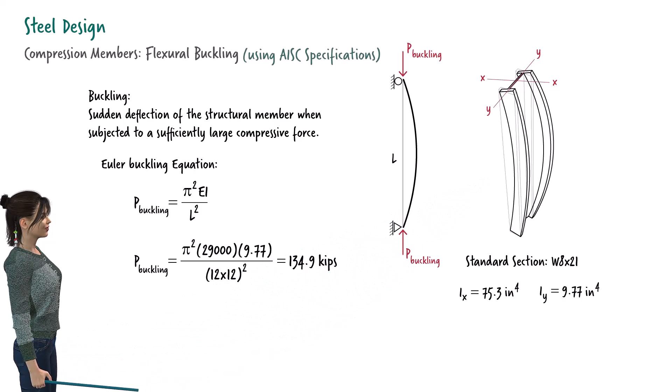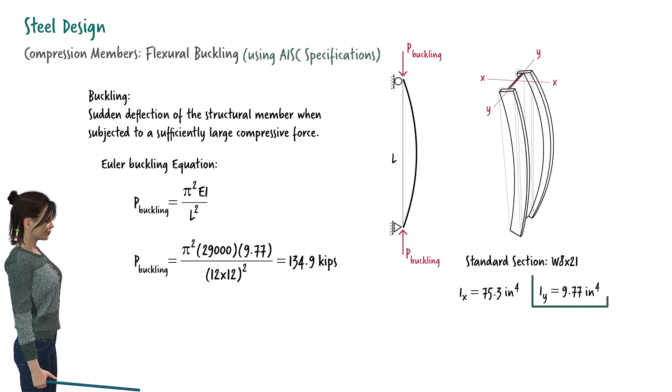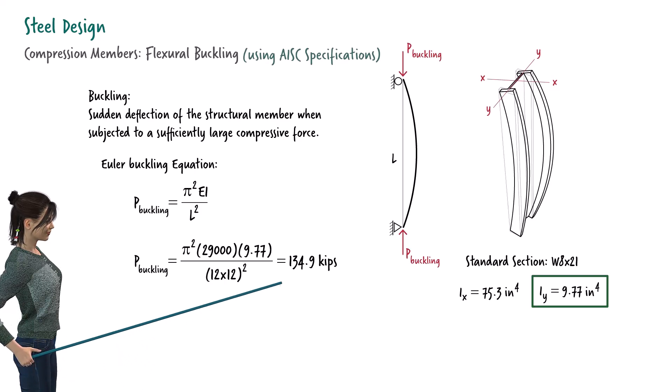Note that the member buckles about the weaker axis, the axis that has the smaller moment of inertia. So, we can say that the nominal strength of this specific member against buckling is 134.9 kips.